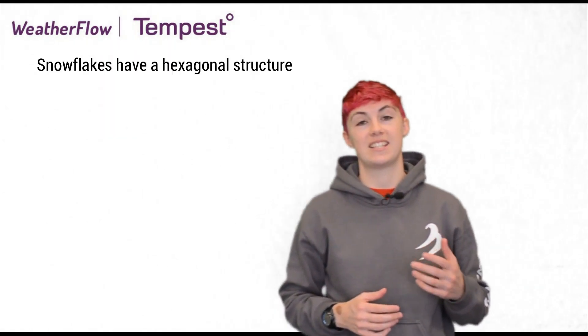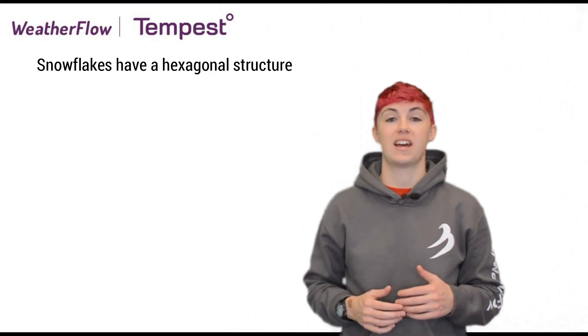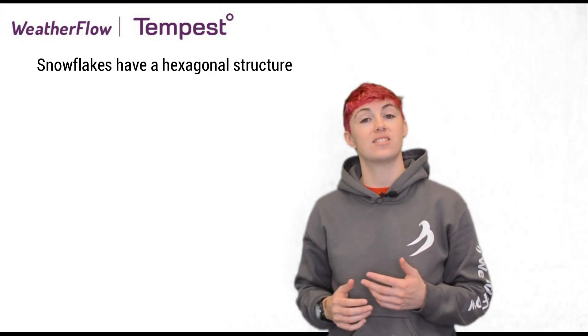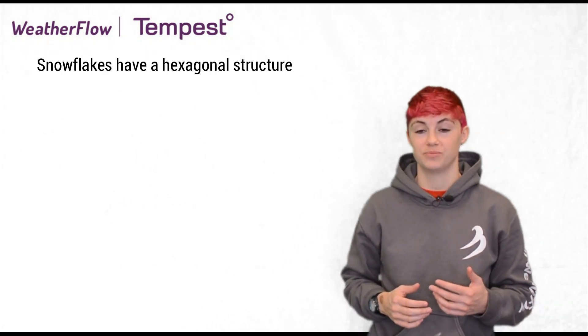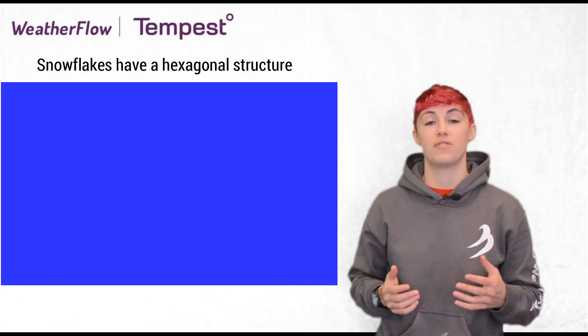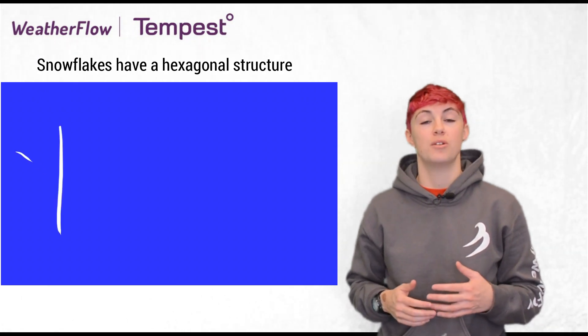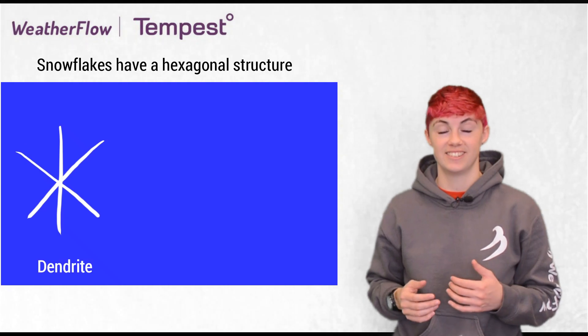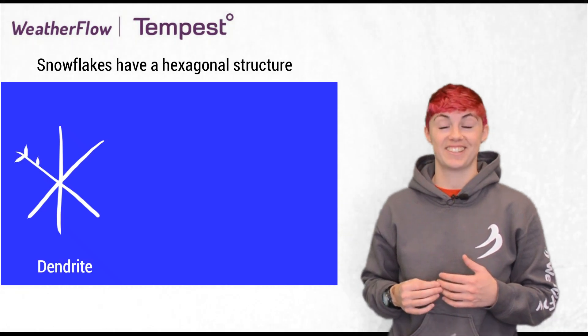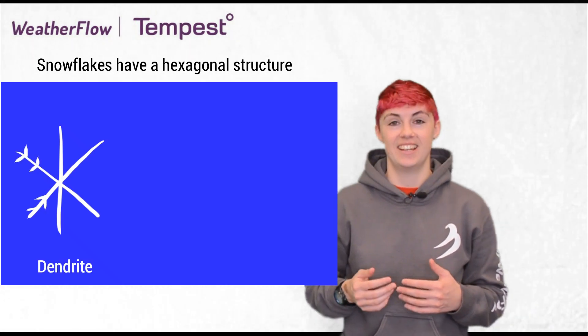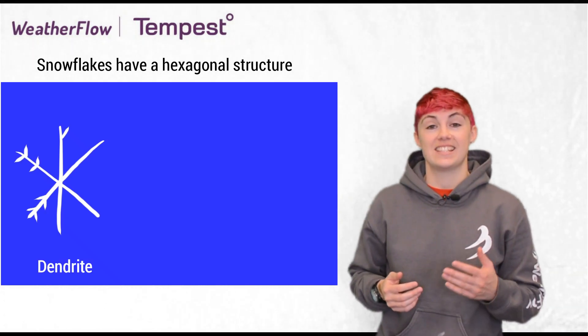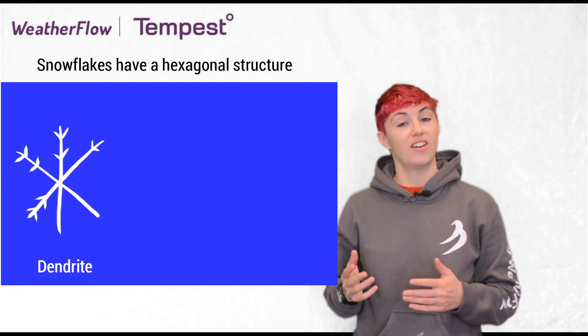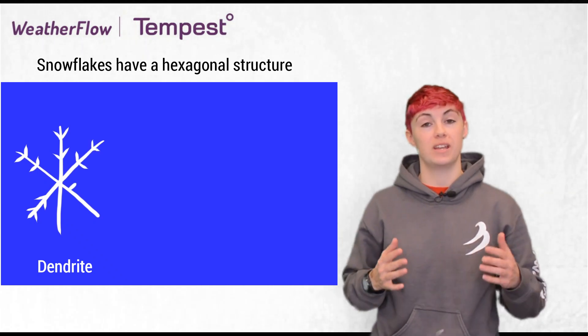Now, all snowflakes are different, but most commonly have a hexagonal structure, meaning they have six sides or six points. Now, if I asked you to draw a snowflake, most of us would draw a dendrite. That looks like this — it has six points, and off those points, we get little branches.